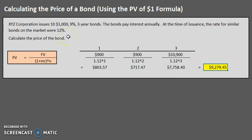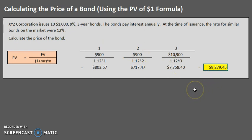Let's recap and tie everything together. The face amount of this bond was $10,000 and it paid 9% interest. However, similar bonds on the market paid 12%, which is better than our bond, so we could not issue it at $10,000. We had to issue it at a discount — a little less than $10,000. We are only getting $9,279.45 because our coupon rate, that stated contract rate, is not as good as the market rate. Therefore, the cash received for the bond is less than the face amount.